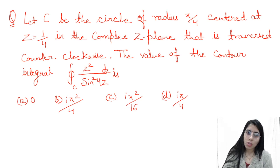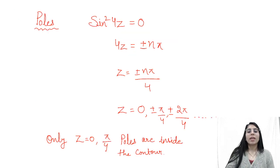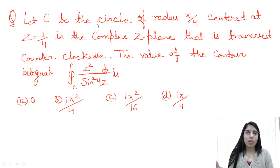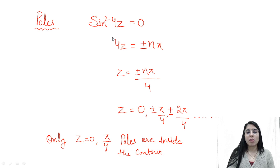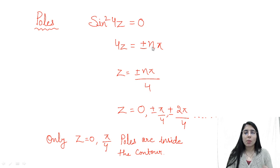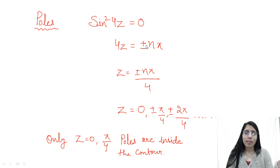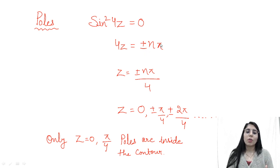The poles are the finite values of z which make the function go to infinity. To get the poles, we equate the denominator with zero. So when we equate sin²(4z) = 0, then 4z will equal the possible values ±nπ. We can include n = 0 separately, or write it as ±nπ for n = 1, 2, 3, and so on. So z = ±nπ/4 is what we get.